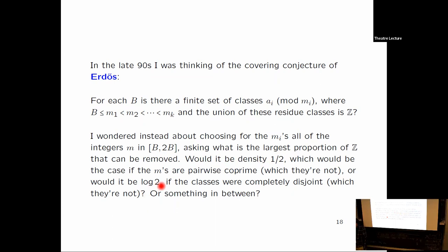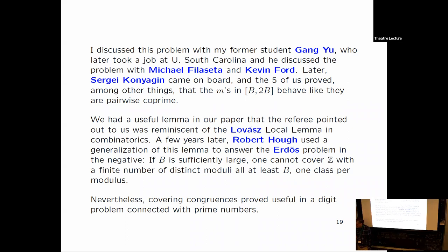If you look at product 1 minus 1 over n, as n ranges over that interval, it would be telescoping down to one half. So the answer would be somewhere between one half and log 2. So what is it? So we discussed this problem with a grad student of mine at the time at Georgia named Gang Yu. He later took a job at South Carolina where he discussed this problem with Filaseta and Ford. And later Sergey Konyagin came on board. And the five of us proved, among other things, that the density is more like as if they were pairwise coprime. The best you can do asymptotically is log 2.